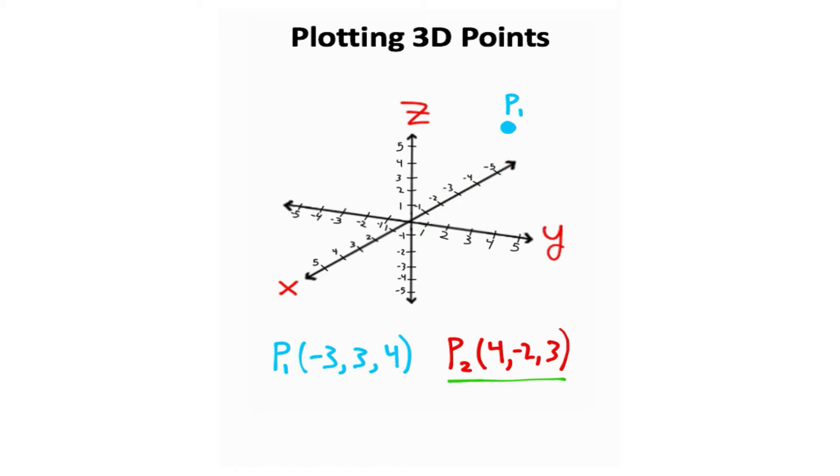Now if I want to plot point two, I just do the same thing. So here I go four units in the x direction, negative two units in the y direction, three units in the z direction, and that plots point two right there.